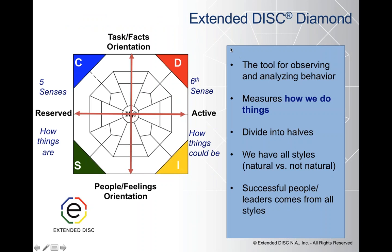So let's get into the Extended DISC model. We took the four-quadrant DISC model and enhanced it — we added another layer to it. We inserted the diamond. As if you're looking down on top of the diamond, you can see the different facets. Those facets divide each of the quadrants into specific sections, helping us to better identify the different styles for each quadrant. It's a tool for observing and analyzing behavior.